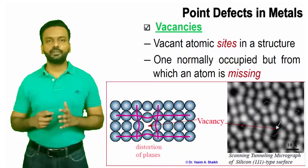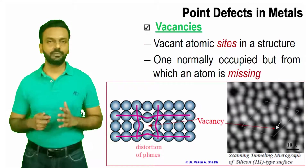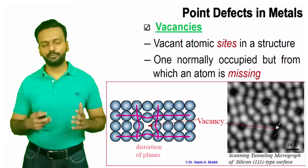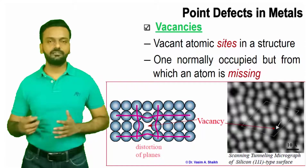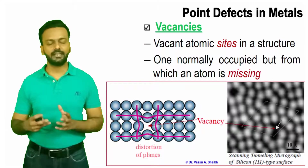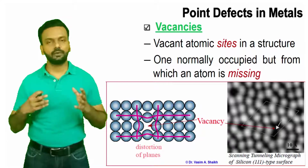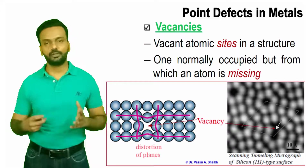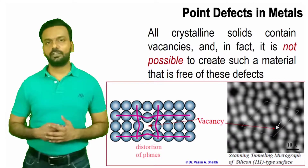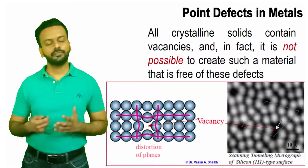A site normally occupied but from which an atom is missing is called a vacancy. You cannot avoid vacancies in a material — during the process of solidification, not all atoms will sit at their positions. Some atoms will go to different sides and positions, missing from their normal regular site in the crystal structure.